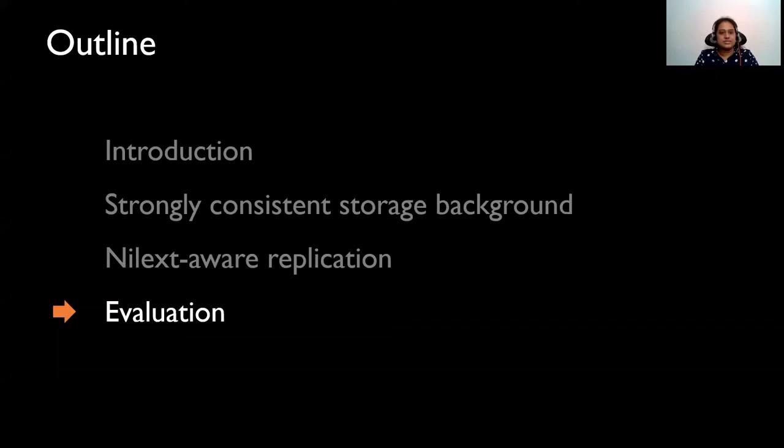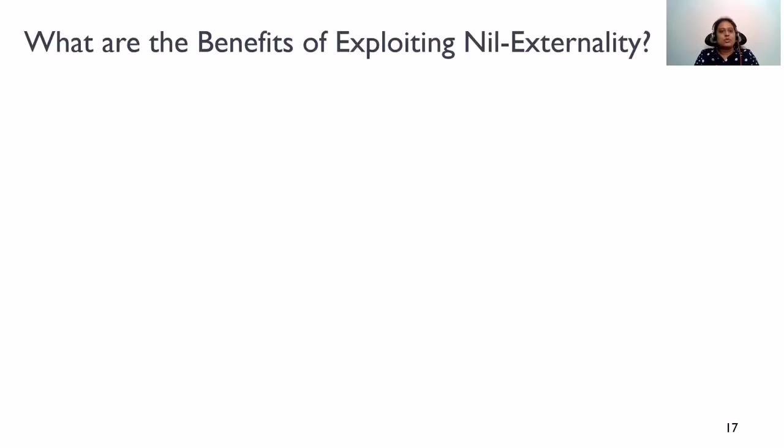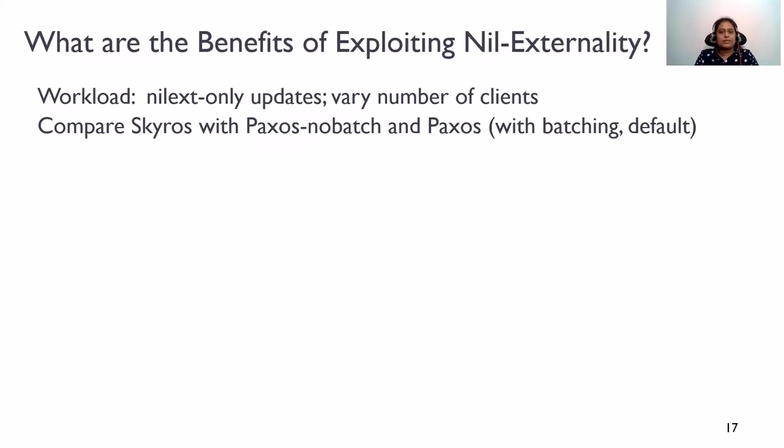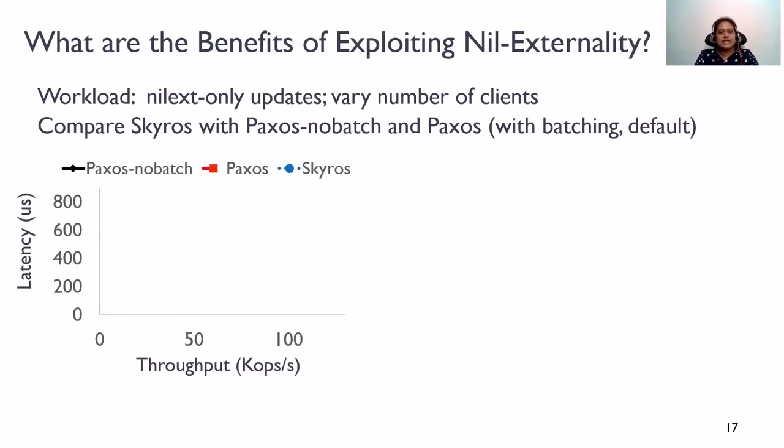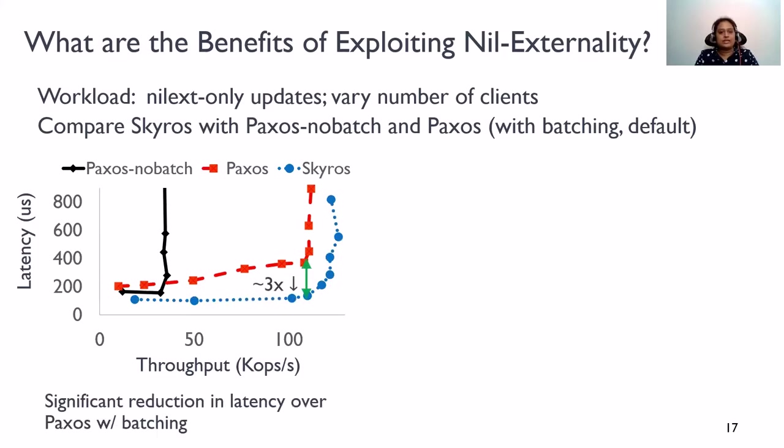Now, let's take a look at some results. So, what are the benefits of exploiting nil externality? To answer this question, we compare Skyros against Paxos with and without batching for nilext-only workloads varying the number of clients. And we plot the latencies against throughputs. With batching, Paxos achieves high throughput. Skyros matches the high throughput of batching, but it incurs significantly lower latencies compared to Paxos because it can complete nilext requests in one round trip.